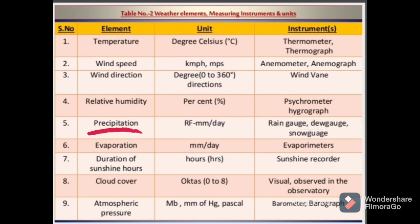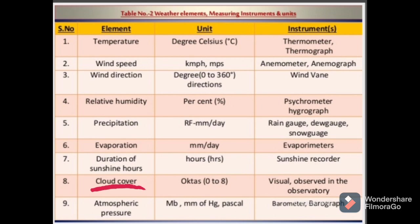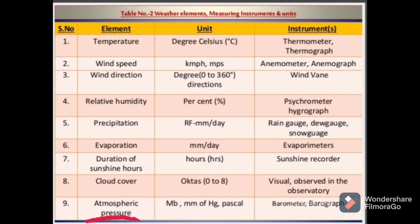Fourth, relative humidity expressed in percent using psychrometer and hygrograph. Fifth, precipitation expressed in rainfall millimeter per day using rain gauge and snow gauge. Sixth, evaporation expressed in millimeter per day using evaporimeters. Seventh, duration of sunshine hours expressed in hours using sunshine recorder. Eighth, cloud cover using the unit octas from 0 to 8, with visual observation in the observatory. Ninth, atmospheric pressure expressed in millibars, millimeter of mercury, or pascal using barometer or barograph.